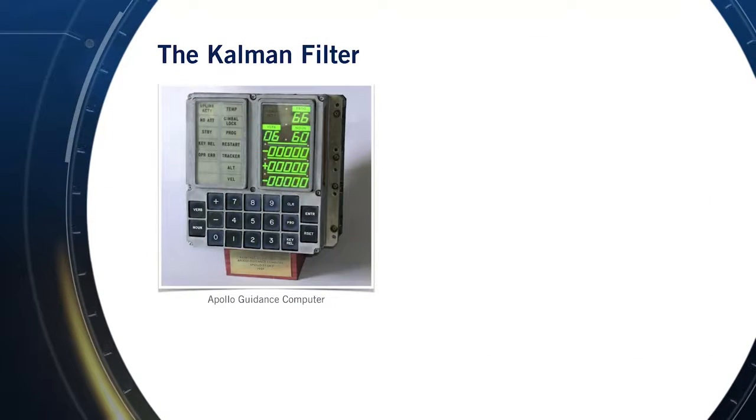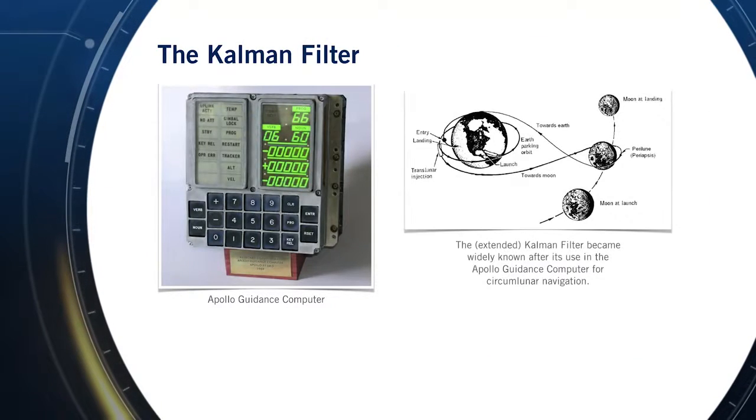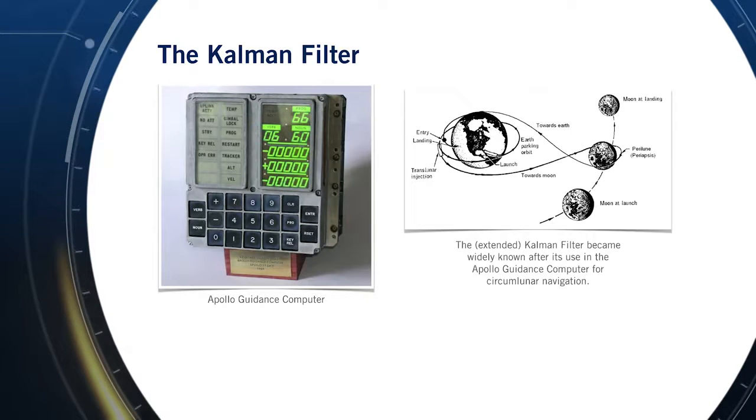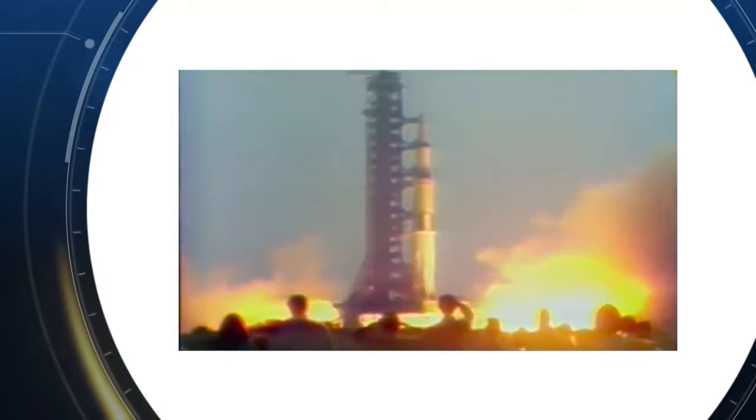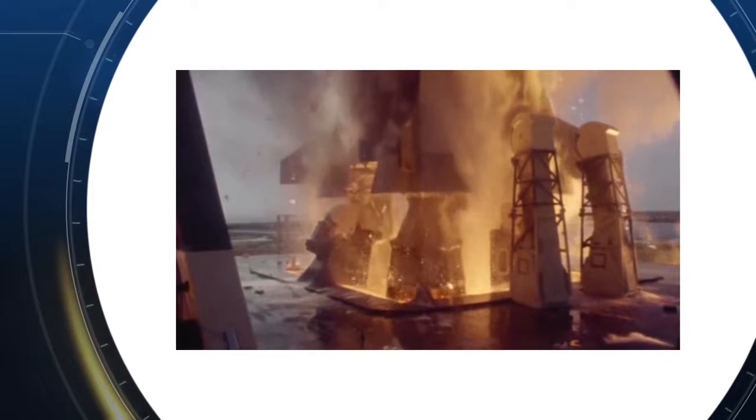After its publication in 1960, the Kalman Filter was adopted by NASA for use in the Apollo guidance computer. It was this groundbreaking innovation that played a pivotal role in successfully getting the Apollo spacecraft to the Moon and to our first steps on another world.